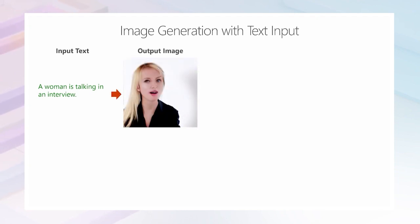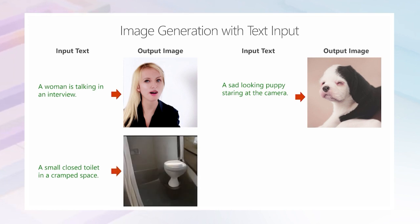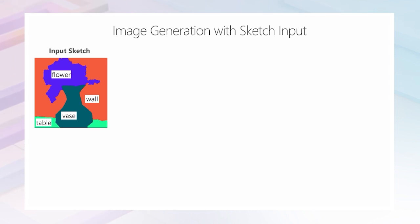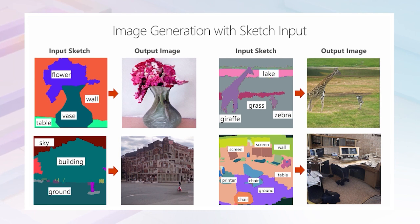Now let's see what Nuwa can do. First, let's generate some images from text. Starting with easy ones: 'a woman is talking in an interview.' Pretty cool. How about adding feelings: 'a sad-looking puppy staring at the camera' — the puppy really looks sad. Let's try harder ones: 'a small, closed toilet in a cramped space' — the toilet is really small. And a very specific description: 'a black and white landscape photograph of a black tree on a foggy autumn morning.' How about generating images with the exact layout we want? For example, a vase with flowers in a strange shape on a table beside a wall. The generated result matches well. You can also try more complex layouts, like a giraffe and a zebra, a large building, or even a messy room with many things.